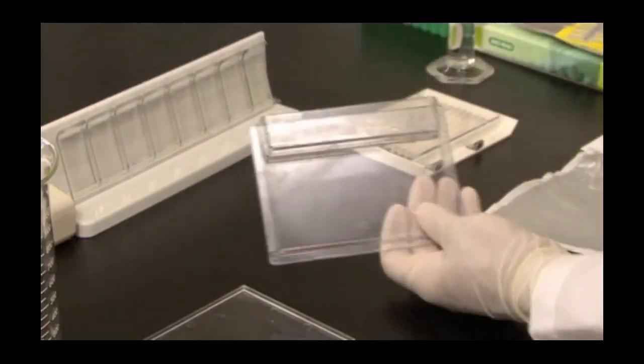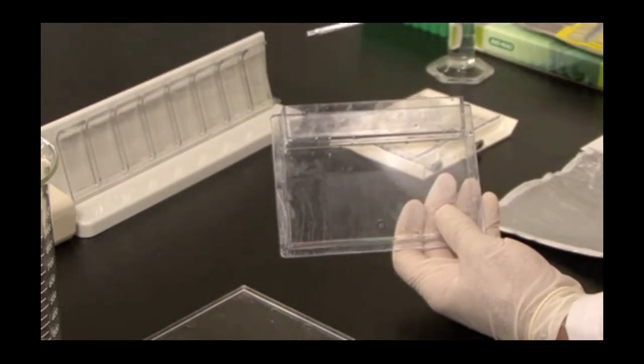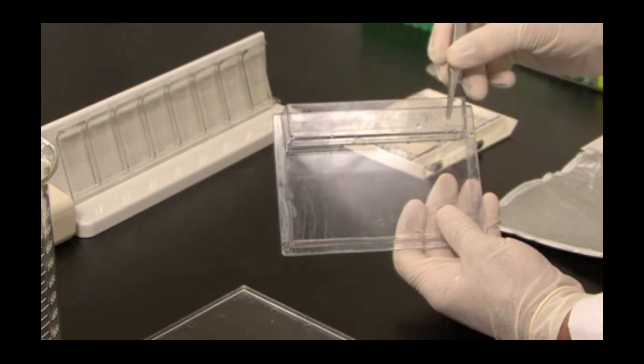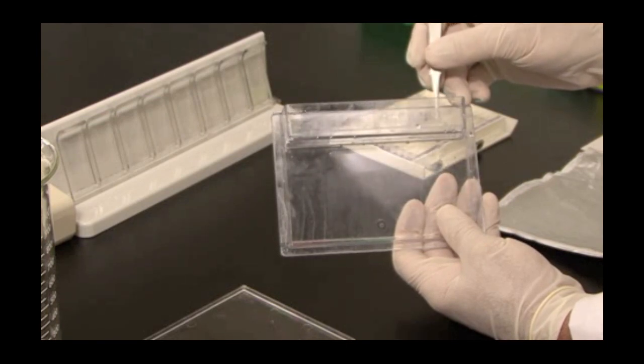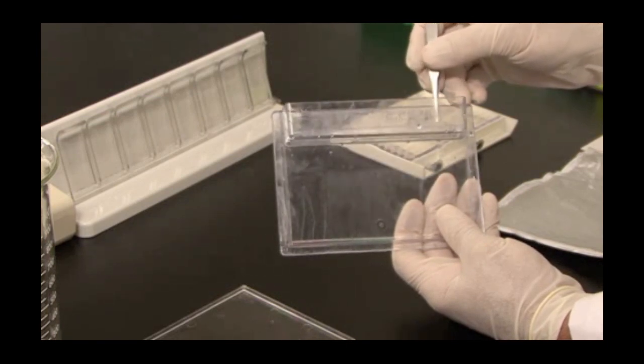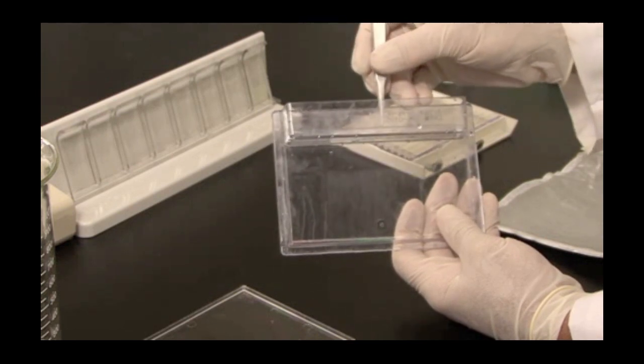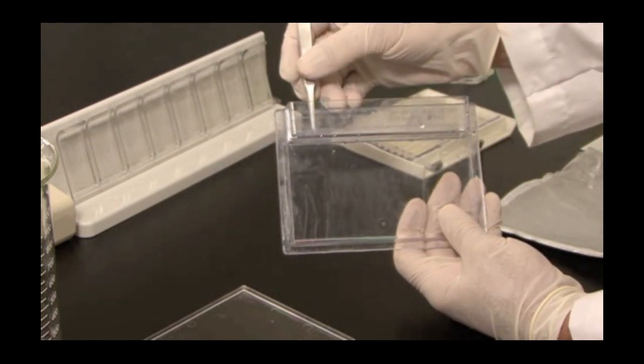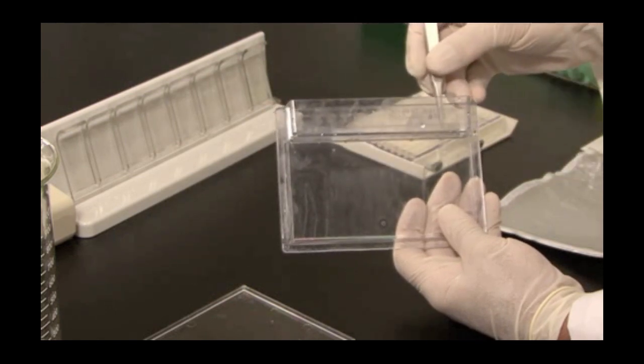Place the IPG strip gel side up. Place the plastic backing against the back of the cassette. Position the strip centered in the middle of the well with your forceps. And gently push on the strip until it touches the gel. You can tell when it's touching because you'll feel a little bit of springiness, a little bit of resistance. Don't push too hard.